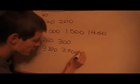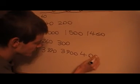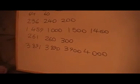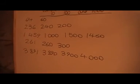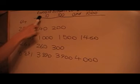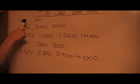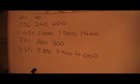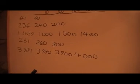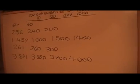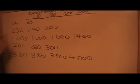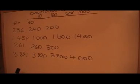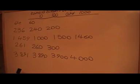Looking at the hundreds column, which is a nine, round it up to 4000. So to summarize: to round to the nearest ten, look at the units column; to round to the nearest hundred, look at the tens column; to round to the nearest thousand, look at the hundreds column. Round up if it's five or more, and round down if it's less than five.